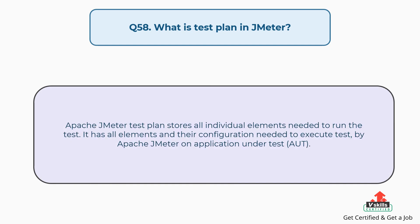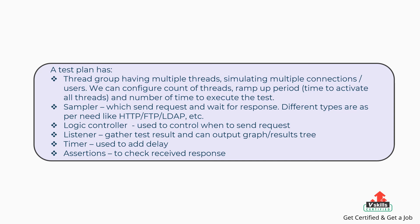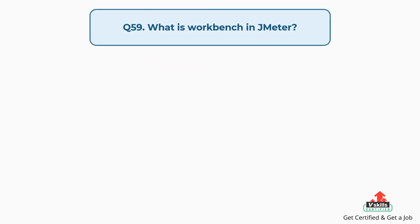Question 58: What is a test plan in JMeter? An Apache JMeter test plan stores all individual elements needed to run the test in their configuration. A test plan includes: a Thread Group (with thread count, ramp-up period, and execution count); Samplers that send requests and wait for responses (HTTP, FTP, LDAP, etc.); Logic Controllers to control when to send requests; Listeners to gather results and output graphs or result trees; Timers for delays; and Assertions to check responses.